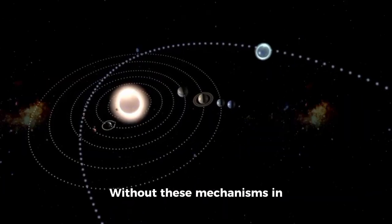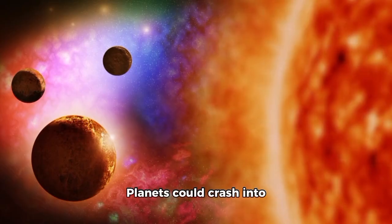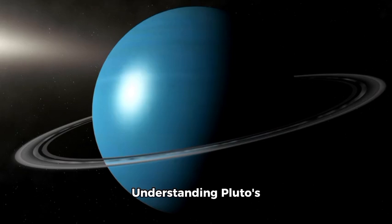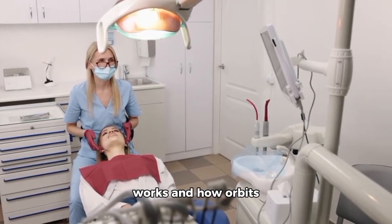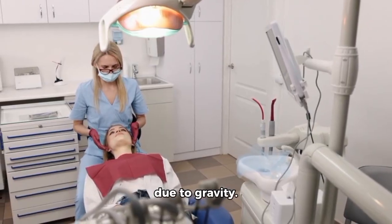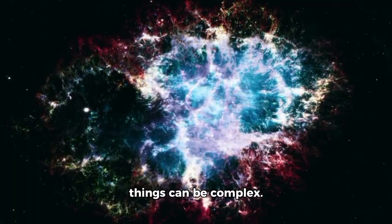Without these mechanisms in place, our solar system would be much more chaotic. Planets could crash into each other or get thrown out of the system. Understanding Pluto's orbit is important because people wonder if it could hit Neptune one day. It helps us understand how the solar system works and how orbits that seem unstable can maintain equilibrium due to gravity. Looking closely at space shows us that things can be complex.